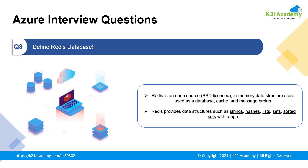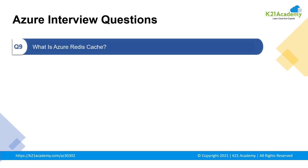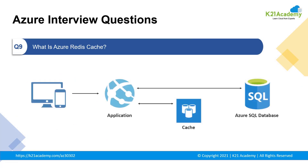Next up, we have a surprise question that was asked by Witch.ai: what is Azure Redis caching? Azure Cache for Redis provides an in-memory data store based on Redis software. It provides secure and dedicated Redis server instances for full Redis API compatibility. The service is operated by Microsoft, hosted on Azure, and usable by any application within or outside of Azure.